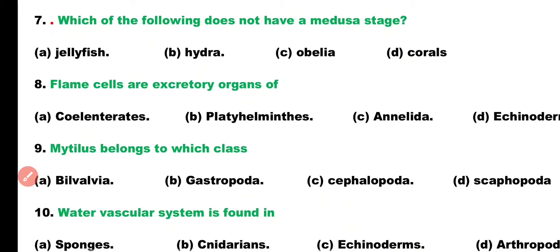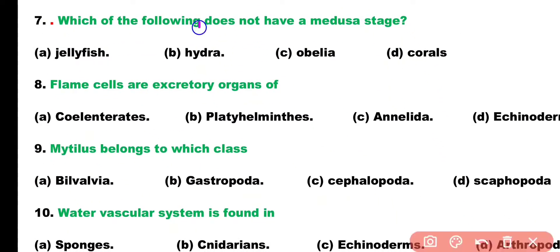Question 7. Which of the following does not have a Medusa stage? Jellyfish, Hydra, Obelia, or Corals? Correct answer is Option D. Coral belongs to class Anthozoa. And in them is only polyp stage. There is no Medusa stage present. Corals have no Medusa stage.